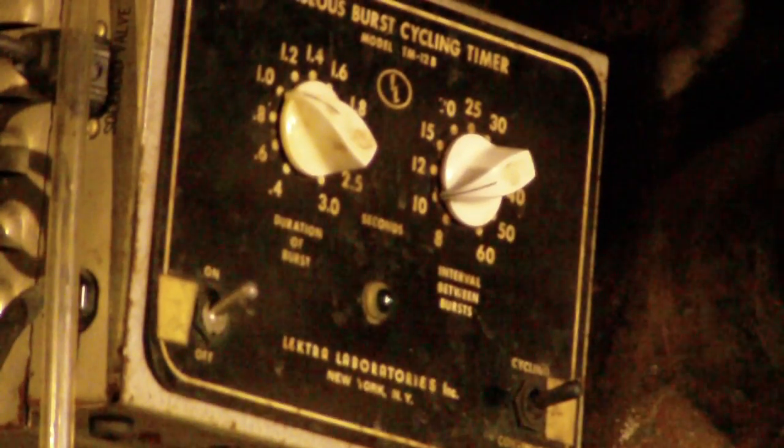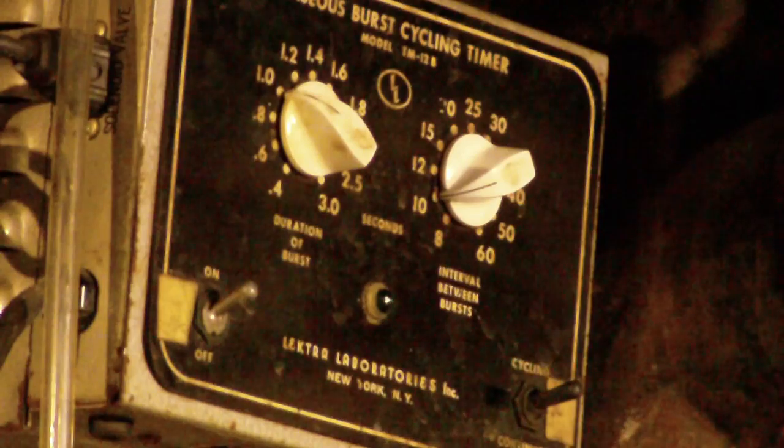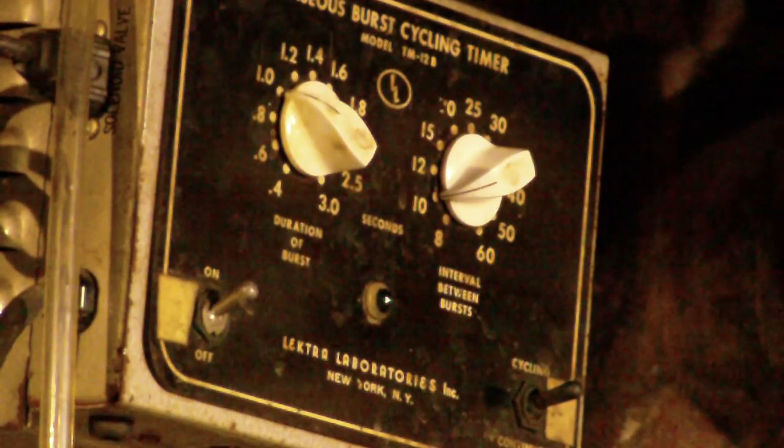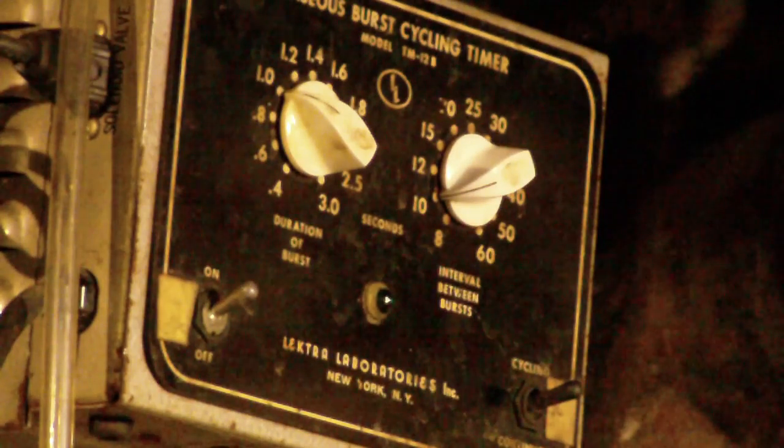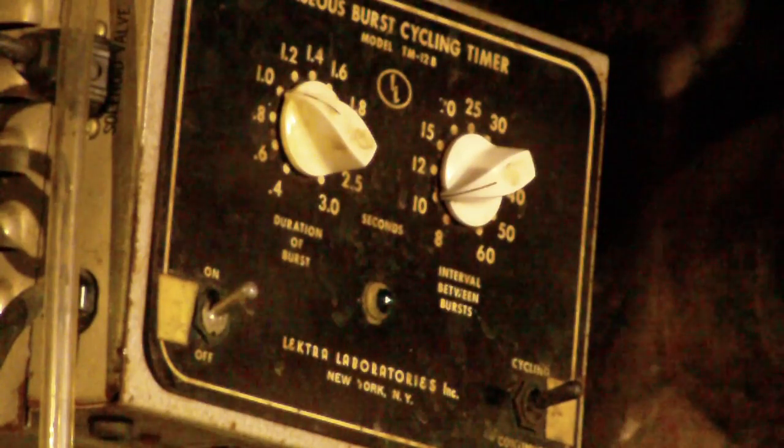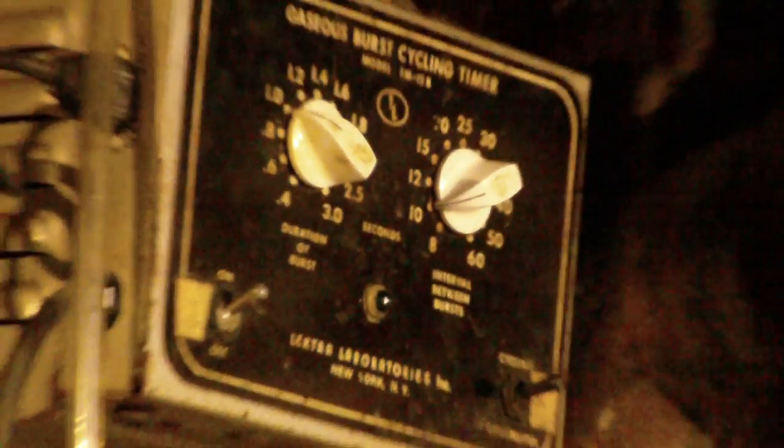The noise is the cycling timer, which is up here. This timer is rather old, made in late 50s early 60s. It has vacuum tubes and two dials: duration of bursts and interval between bursts. I have it set for one-second burst every 10 seconds, which is pretty much typical.